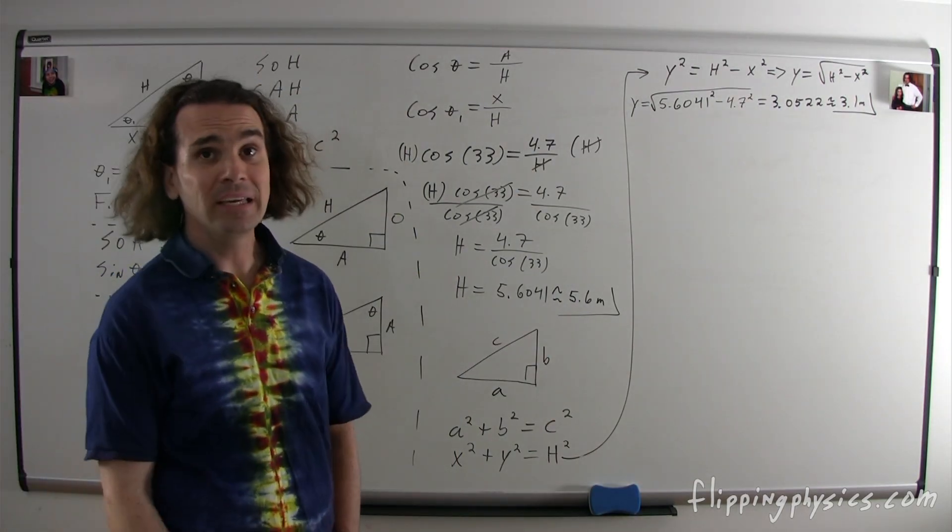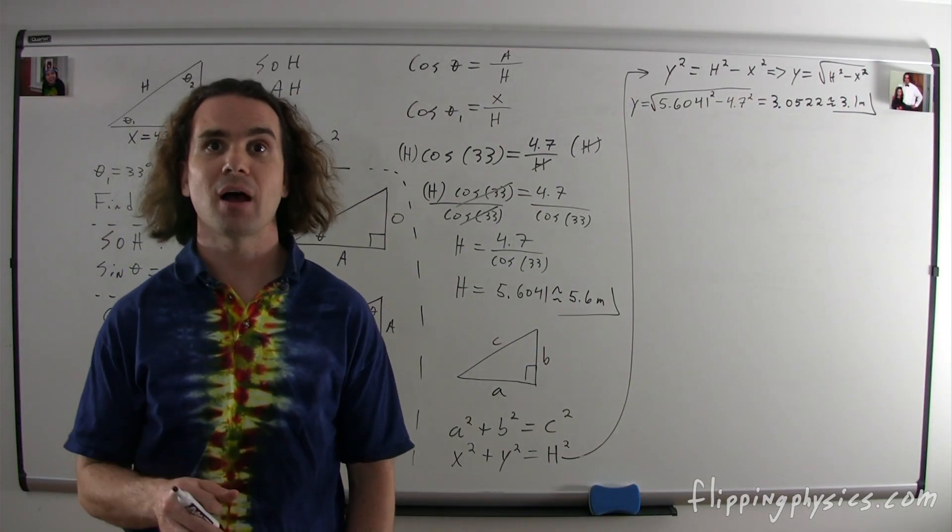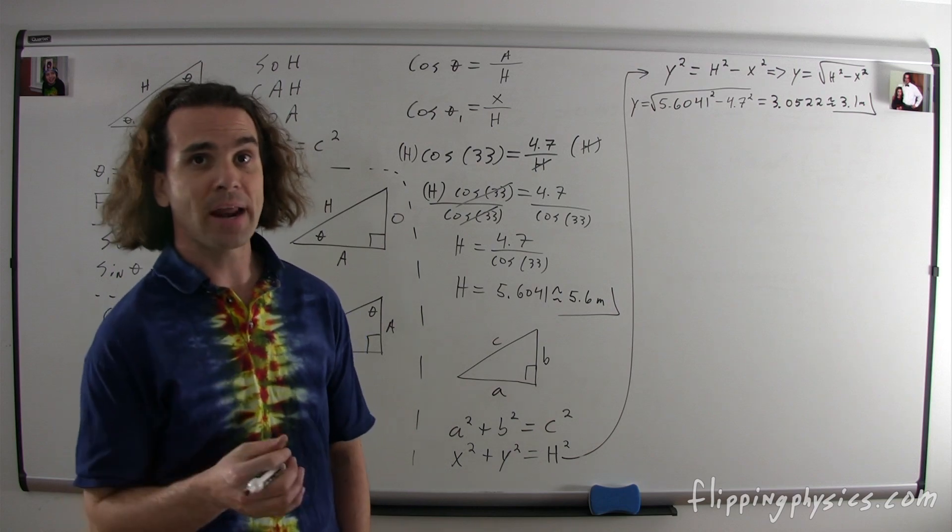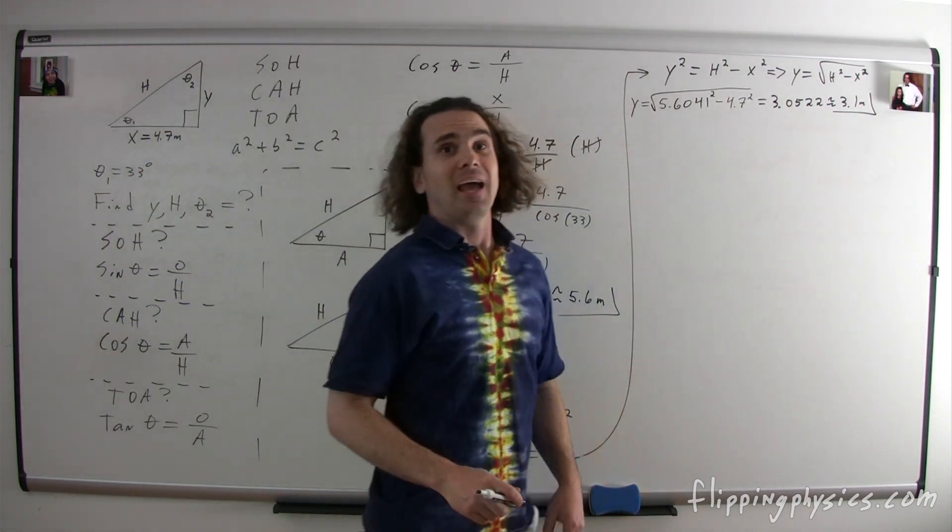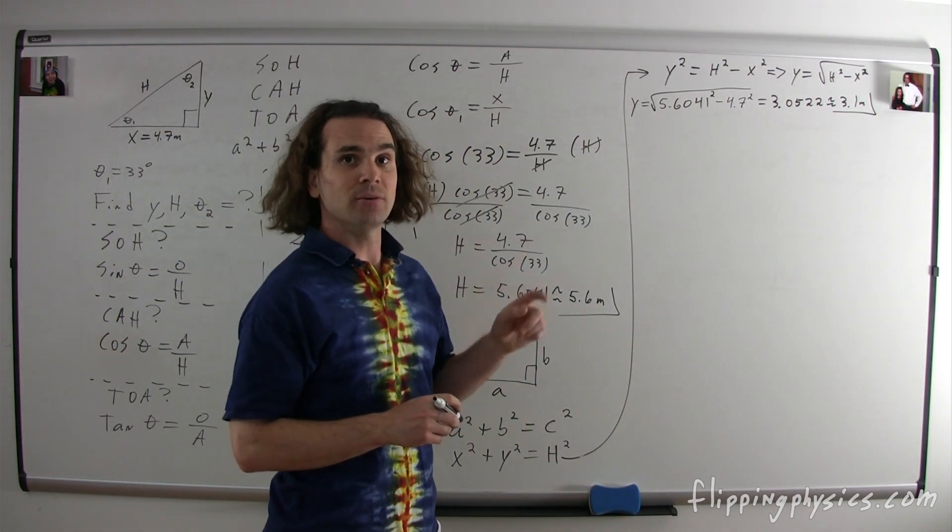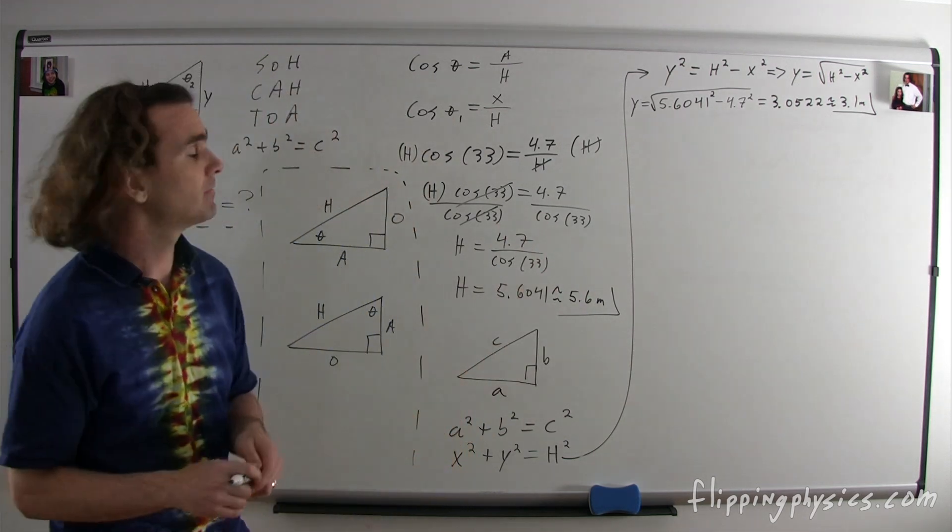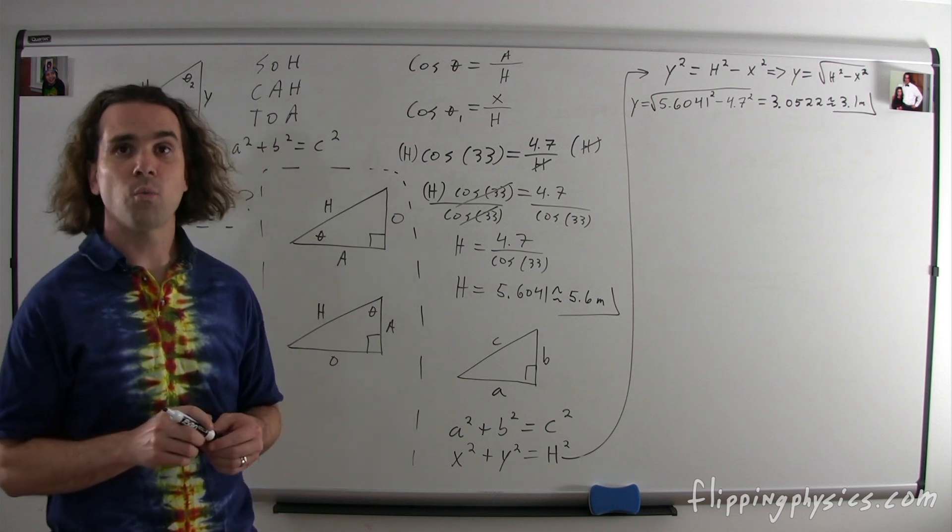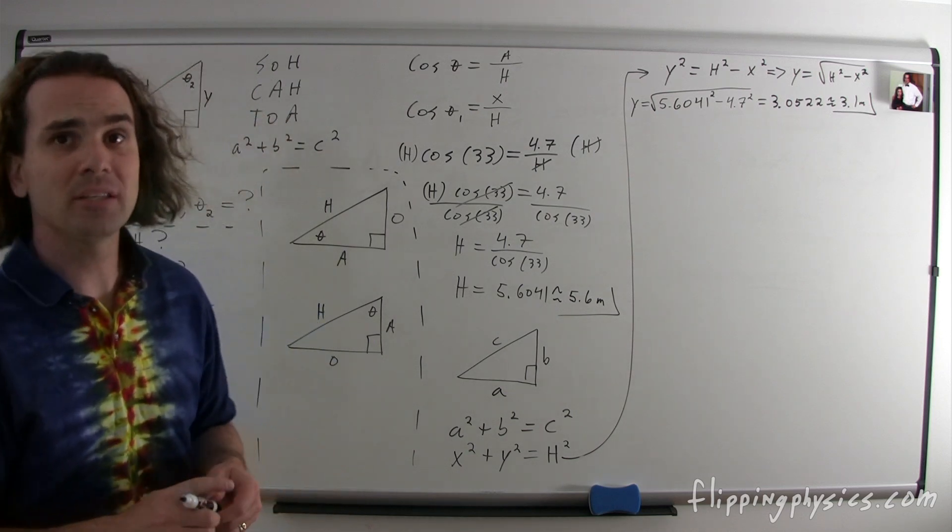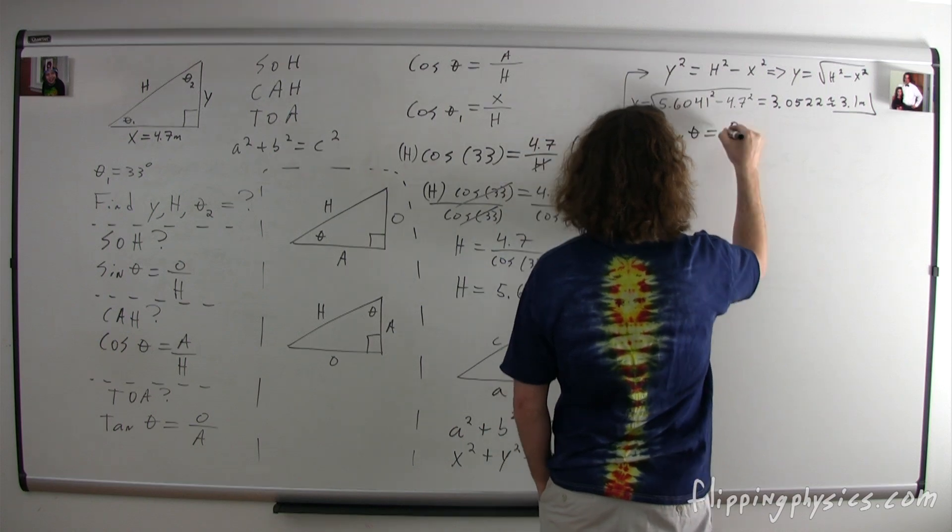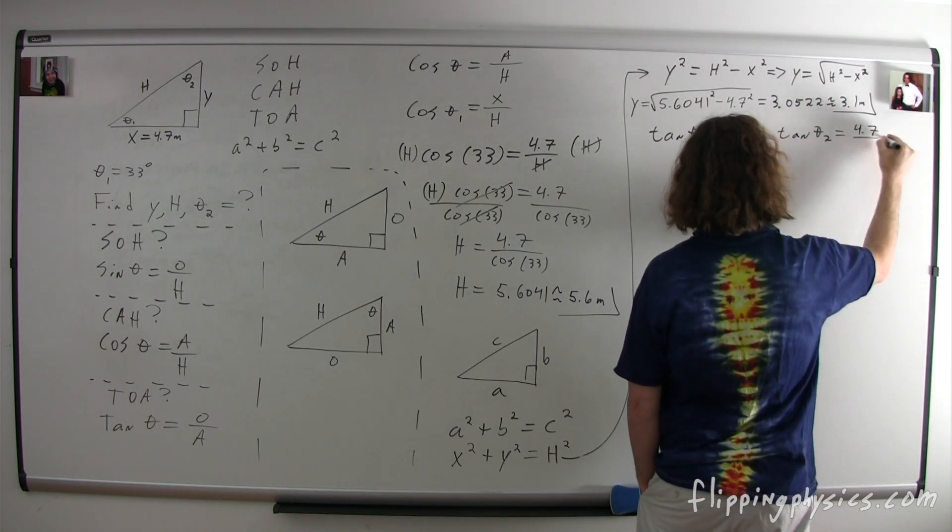Yes, please be careful not to use rounded numbers when solving a problem. This is why I always write out my unrounded answer first and then I round to get my answer. That way I have the unrounded answer if I need it. Now, we have found y and the hypotenuse. Billy, could you please help us find theta 2? Well, tangent theta equals opposite over adjacent, so tangent of theta 2 equals 4.7 over 3.0522.